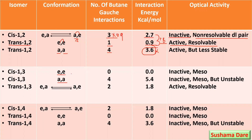For cis-1,3, the EE conformer is more stable because of the absence of axial groups. Equatorial-equatorial means no gauche interaction, and the 1,3-relation means that interaction is also zero — so total gauche interactions are 0 and energy is 0. When the two methyl groups are axial-axial in cis-1,3, each axial group has one gauche interaction — total 2 gauche interactions, plus the axial-axial interaction giving 3.6 kcal/mol.